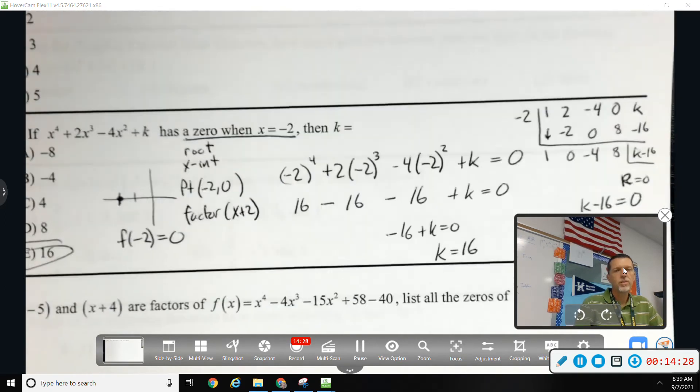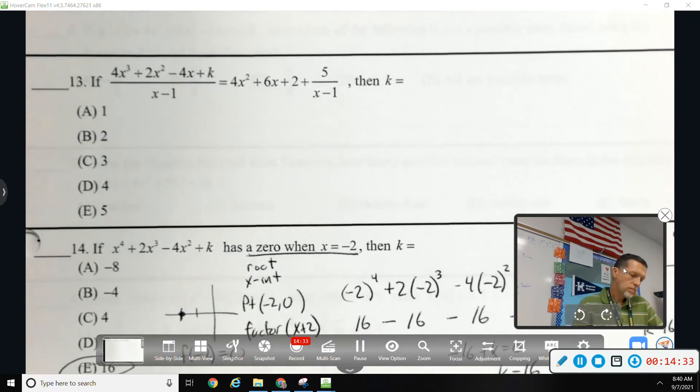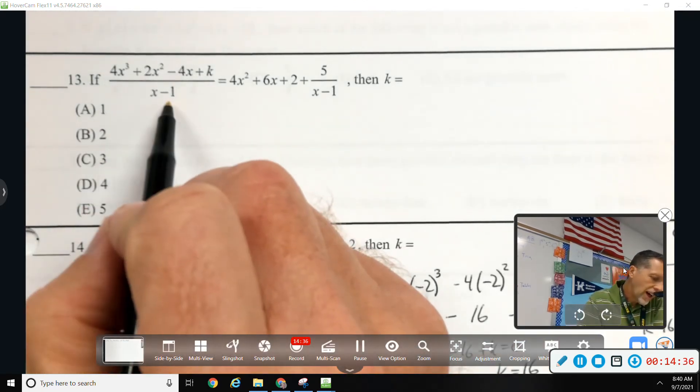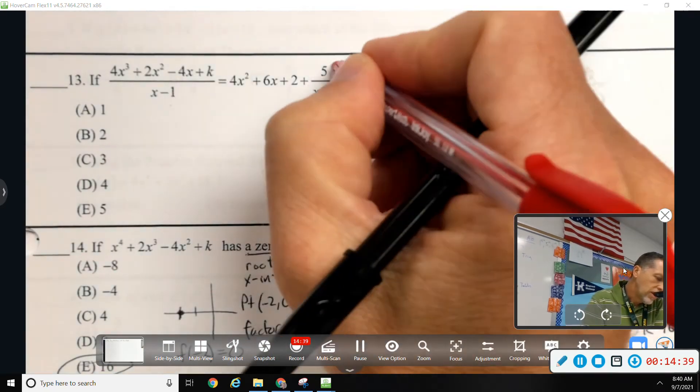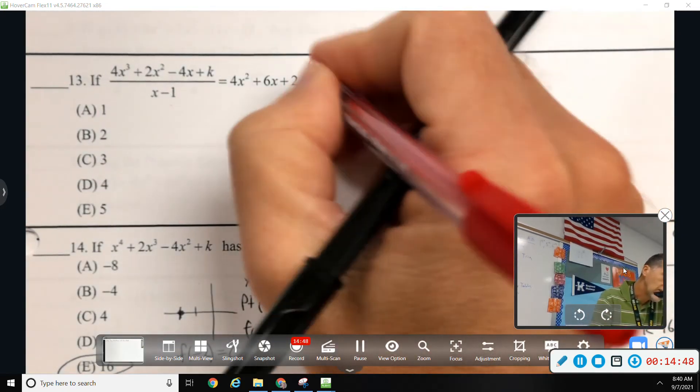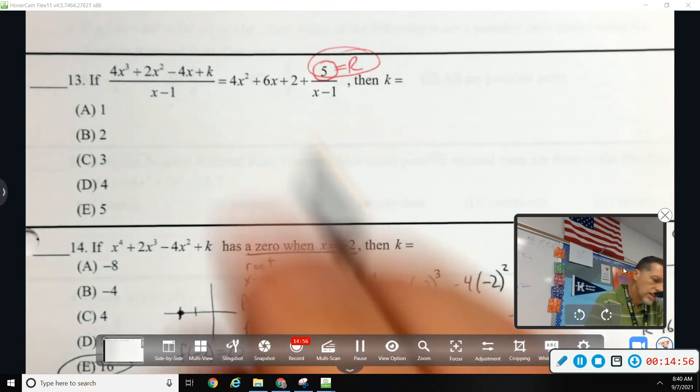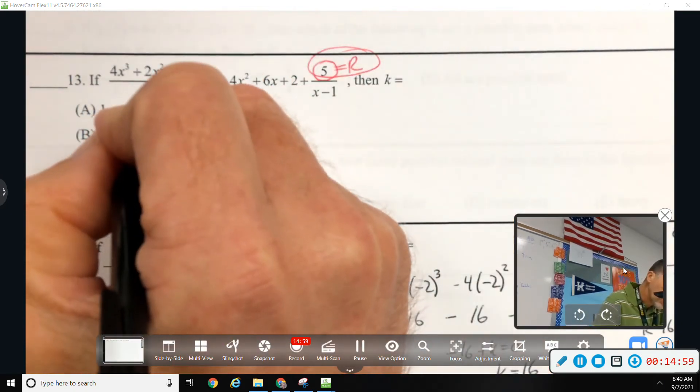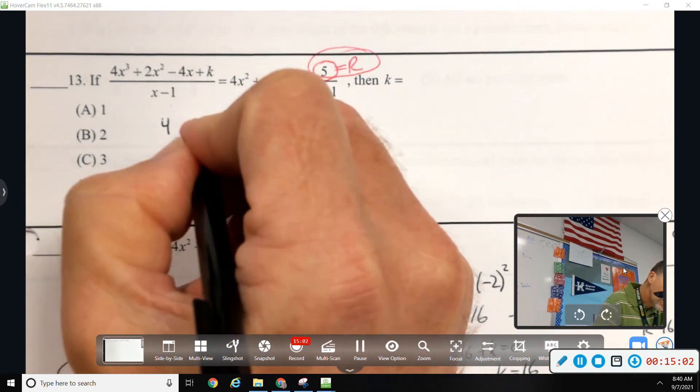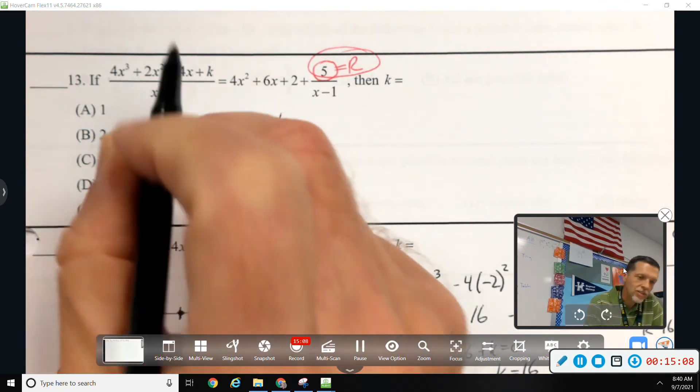All right, let's look at 13. We'll still do 15 in a minute, but let's look at 13. So, if I divide, what does this 5 represent in terms of if we divided? Where did that 5 come from? That was the remainder. So, that's sort of the key to this problem. If I divide, then my remainder should be 5. So, I think that's the best way to work this problem. So, I'm going to synthetic divide. So, take my coefficients, not the X's, just the coefficients. So, 4, 2, negative 4, and K. Wait, you put a 3. Sure did. 4, 2, negative 4, and K.